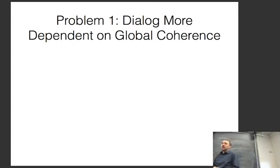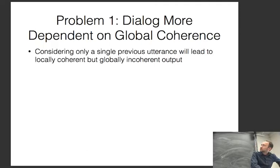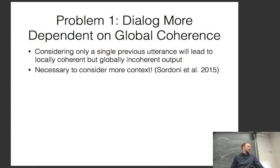Because dialogue and translation are very different, it's not trivial to apply encoder-decoder models to dialogue response generation directly. One problem is that dialogue is more dependent on global coherence — considering only a single previous utterance will lead to a locally coherent but globally incoherent output. Your dialogue won't make very much sense because things you said earlier have no effect on what you say now. So it's necessary to consider more context.